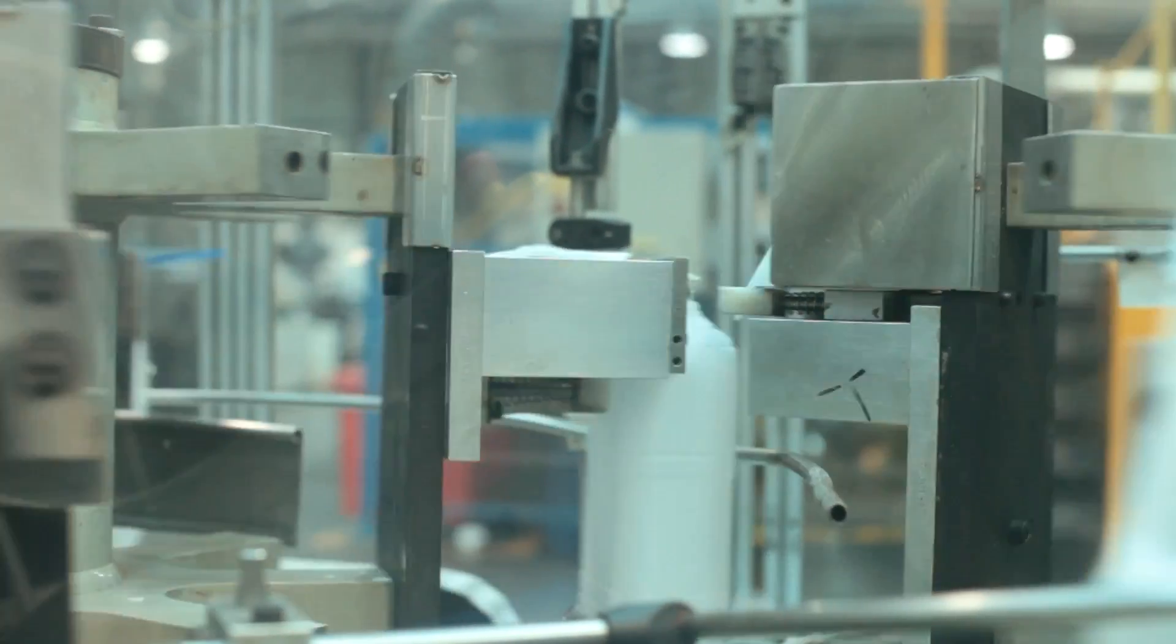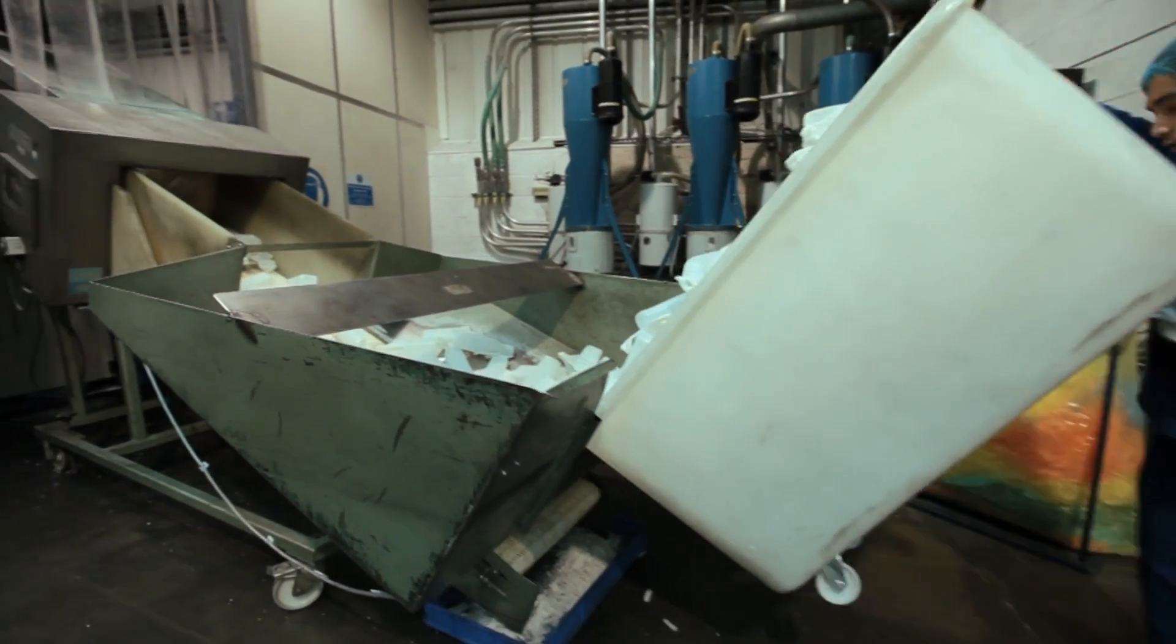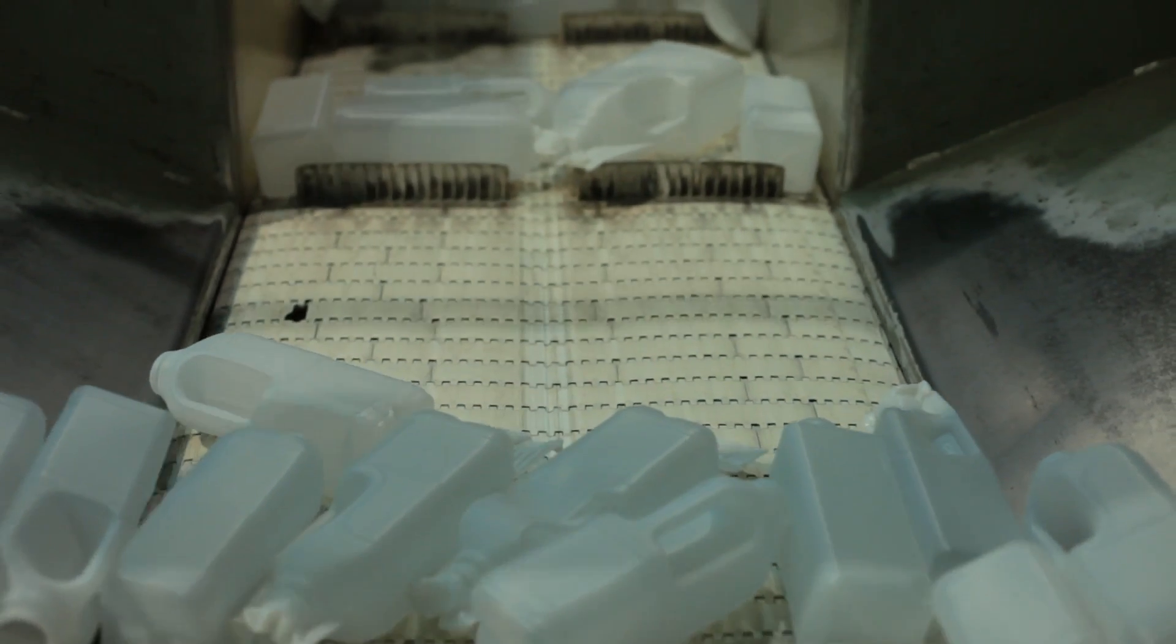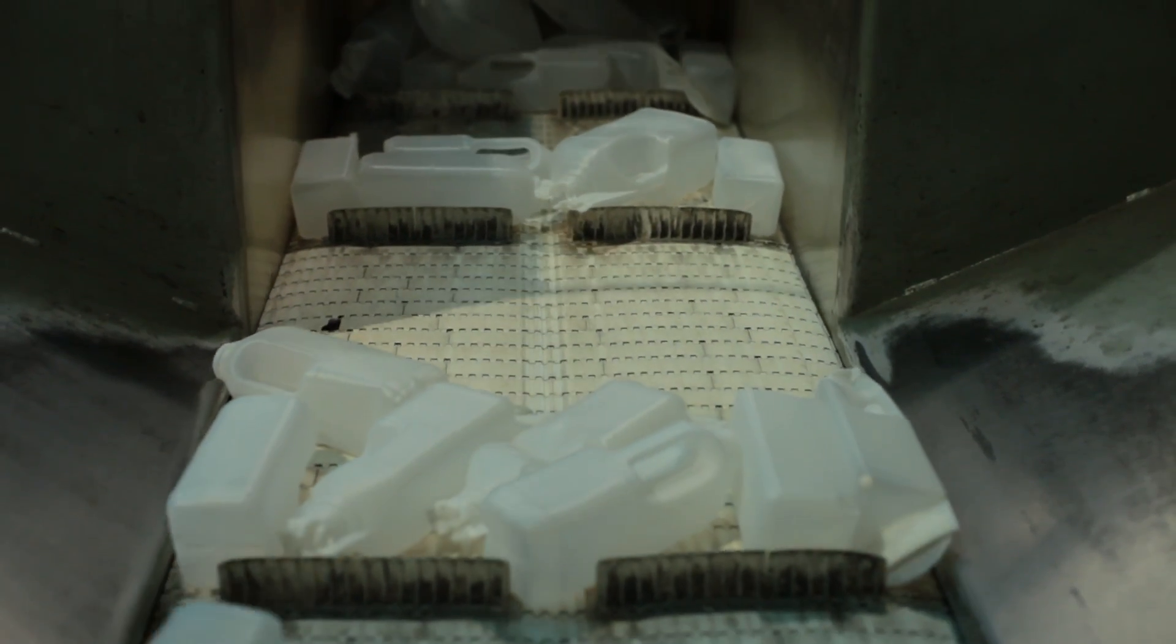We also run our bottles currently up to 15% recycled material. This is post-consumer scrap that we take out of the marketplace and is then effectively reprocessed back into the bottle. Our aim is to follow the milk roadmap and get that up to at least 30%, and then if the material is available, we'd like to take that to 50% in the future.